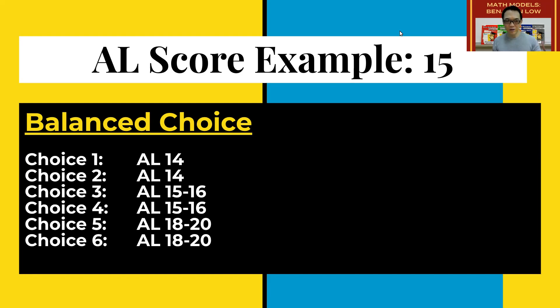The first one here is based on an AL score example of 15 points. So a balanced score, as you can see, the choices are there. The first two choices are like one point below 15. Choice three and four are where the AL score is. And choice five and six is to ensure that you will get the schools that you want, at the very least.